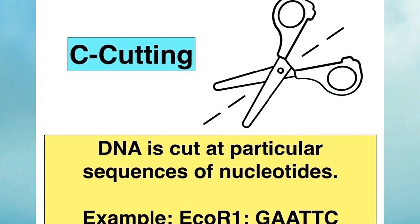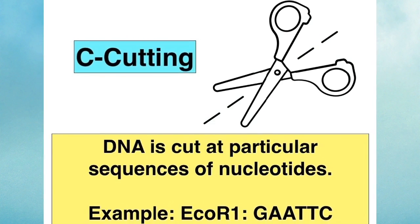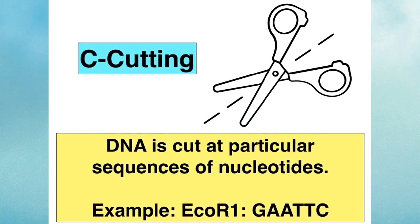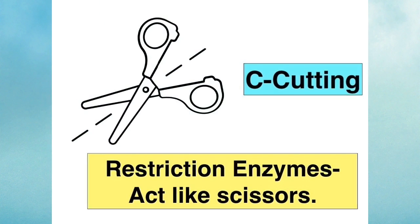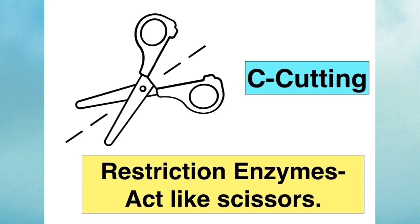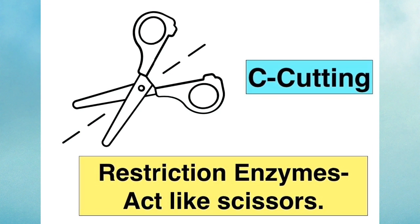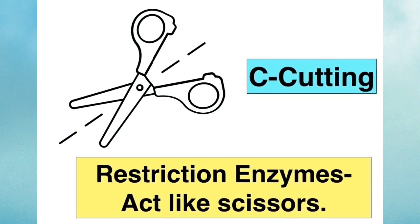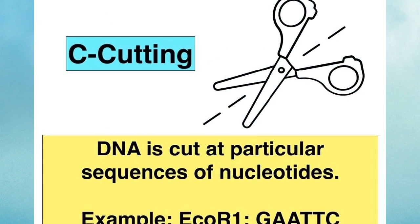Step two is cutting. The DNA removed from the target organism is going to be cut into many fragments using restriction enzymes. These restriction enzymes act like scissors. They recognize particular sequences of nucleotides or bases and they cut the DNA at those positions or sequences. For example, ECO-R1...